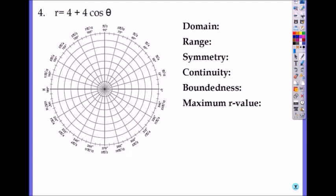4. r equals 4 plus 4 cosine theta. If you have A and B the same, then it's cardioid from the limaçons family. And it's cosine positive, so it will be on the positive x-axis. And the total length will be 4 plus 4, which is 8. So here, 1, 2, 3, 4, 5, 6, 7, 8. So it will look roughly something like this.